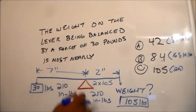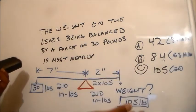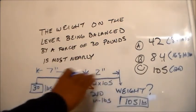2 times 105 is going to give us 210 inch-pounds. And it's just going to stay level. That side's not going to go down. This side's not going to go down. Because we have the same amount of inch-pounds.